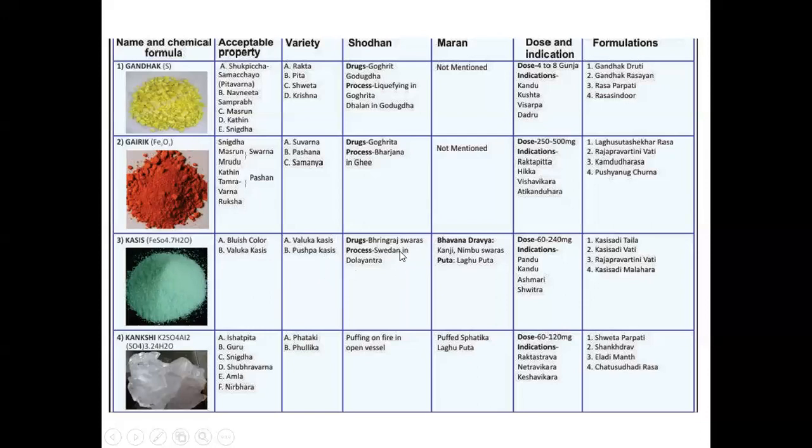For the Shodhana, Bhringaraja Swarasmaka juice is used and Swedhana in Dolayantra is done of these Kasis. Marana, Bhavanadravya is Kanji and Nimbuswaras and Laghuputa is given for the Kasis.